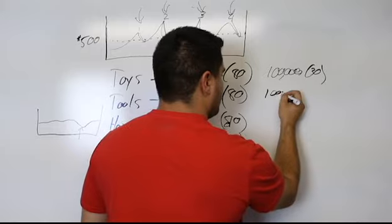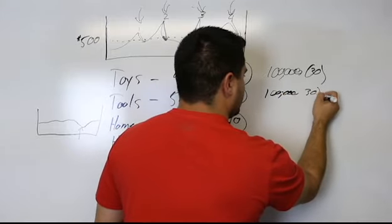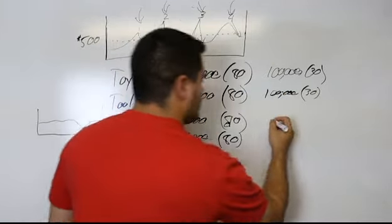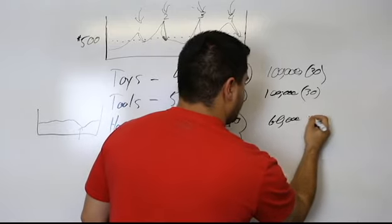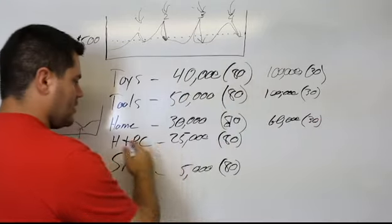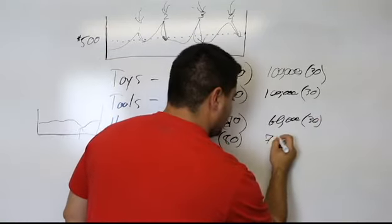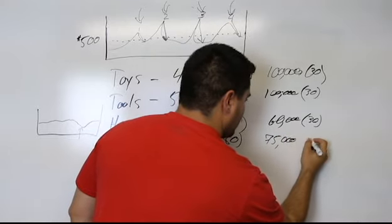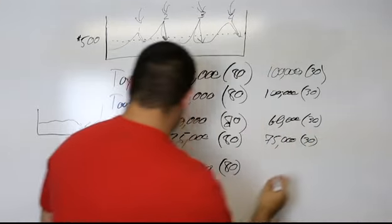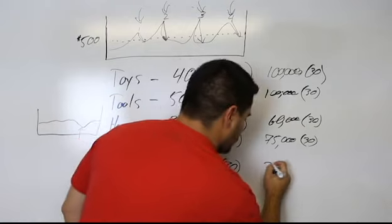Home, let's say I'm going to 60,000, buy 30 of those. Health and personal care, let's say I'm gonna go to 75,000, I'm gonna buy 30 of those. Shoes, let's say I'm gonna go to 25,000, I'm gonna buy 20 of those.